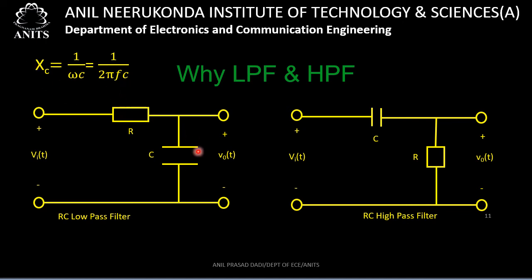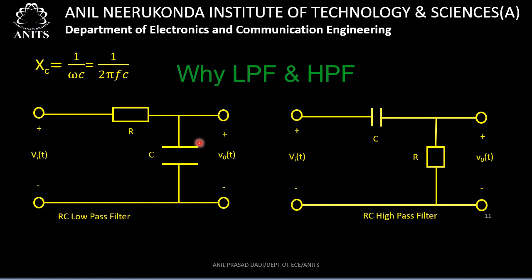When f = 0, Xc = infinity (open circuit), so no current flows through R, the drop across R is 0, and the output voltage equals the input voltage. For low frequencies, the output equals the input — the circuit passes low frequency signals. When f = infinity, Xc = 0 (short circuit), and the output voltage is 0 — the circuit rejects high frequency signals. So it is called a low pass filter.